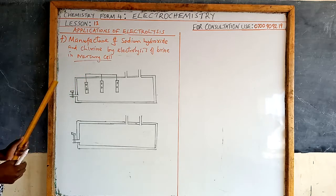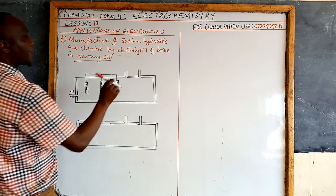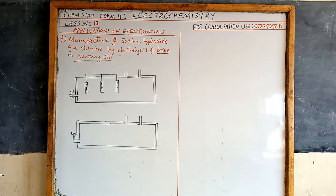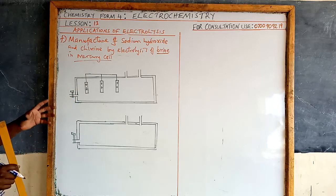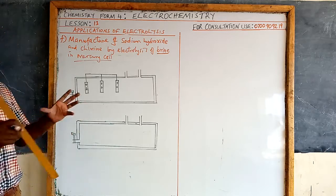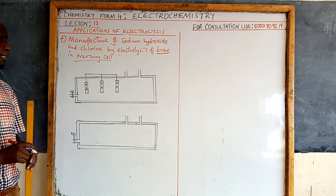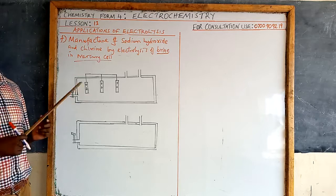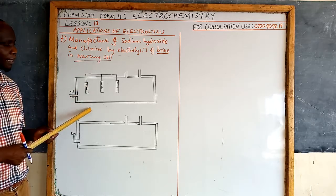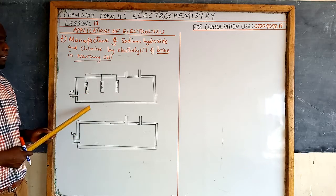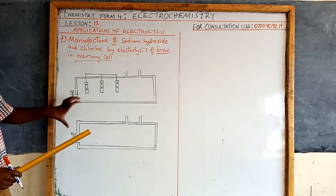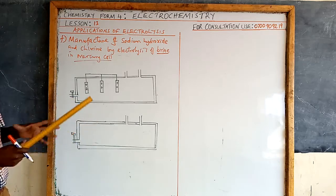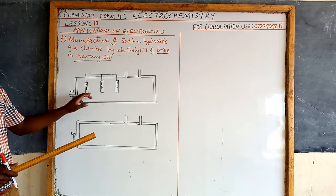These two are manufactured in a mercury cell, where brine is used as the electrolyte. I want to simplify the diagram to demystify it, because when you see the whole diagram drawn in textbooks, it might scare you. You need to master the structure and functioning of the mercury cell, as it is an examinable area often tested in the national exam. Start by drawing two identical structures — it is easy to master.